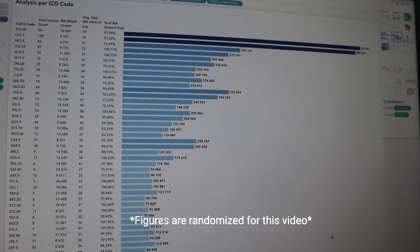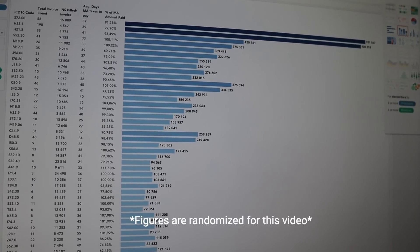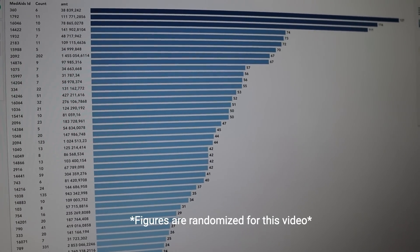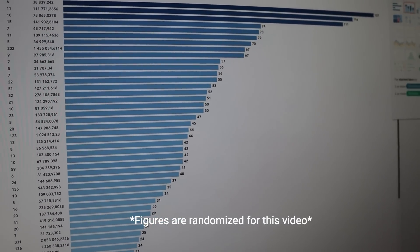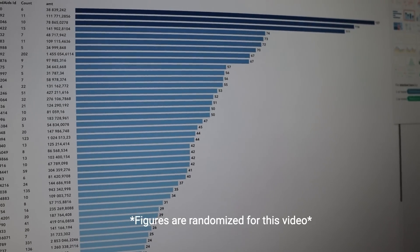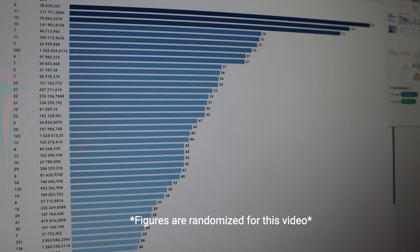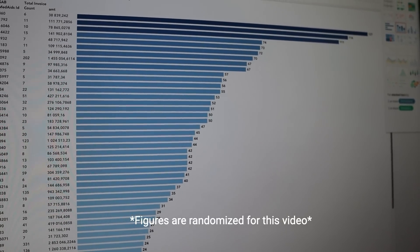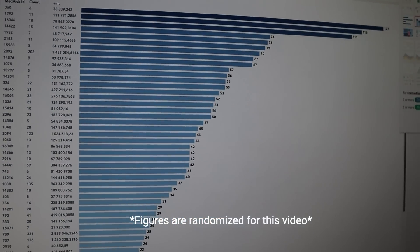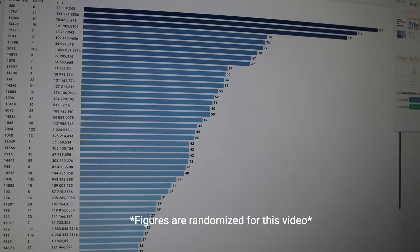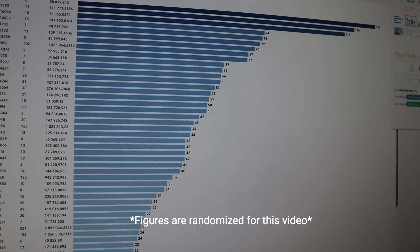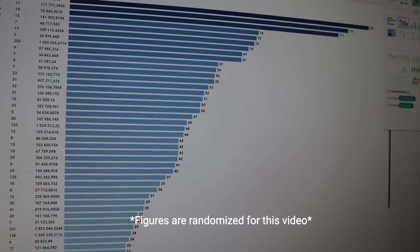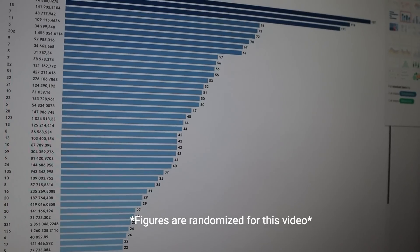The next question — what insurance brings the most amount of money — is also done over here. Similar method: I have the actual insurance ID, the total invoice count, the actual amount, and the bar chart represents how long each insurance takes to pay in days. That very top bar is about 127 days, which is not good. So ideally the client will look at this and see what insurance bills a lot in terms of amount but whether or not they take quite long to pay. All of this data is randomized — I multiplied it by a random factor because this is actual client data.